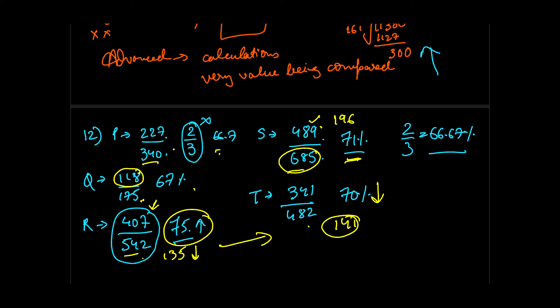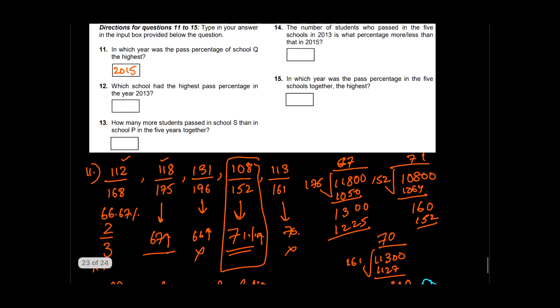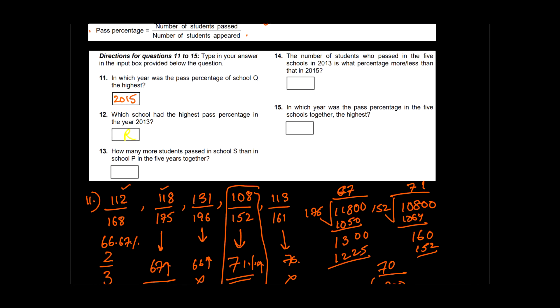We can't use the difference trick directly for smaller denominators like P and Q, but for the larger values it helps eliminate options. The answer to Question 12 is school R at 75%. Two questions solved — the remaining three will be covered in Part 2.